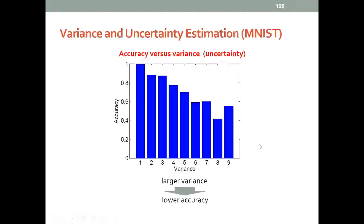Similarly, we look at the MNIST result. As the variance gets larger, the accuracy also gets lower.